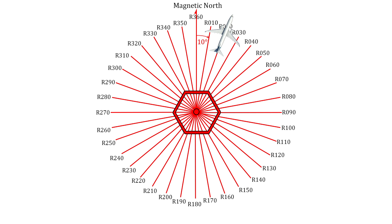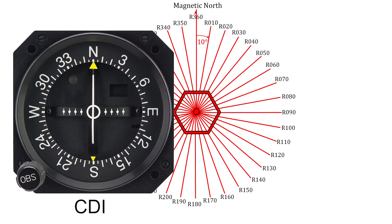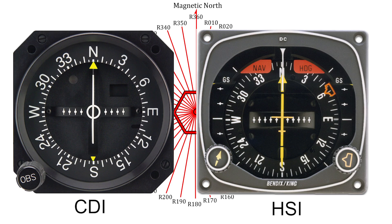To identify these radials on board an aircraft, instruments like course deviation indicator and horizontal situation indicator are used.